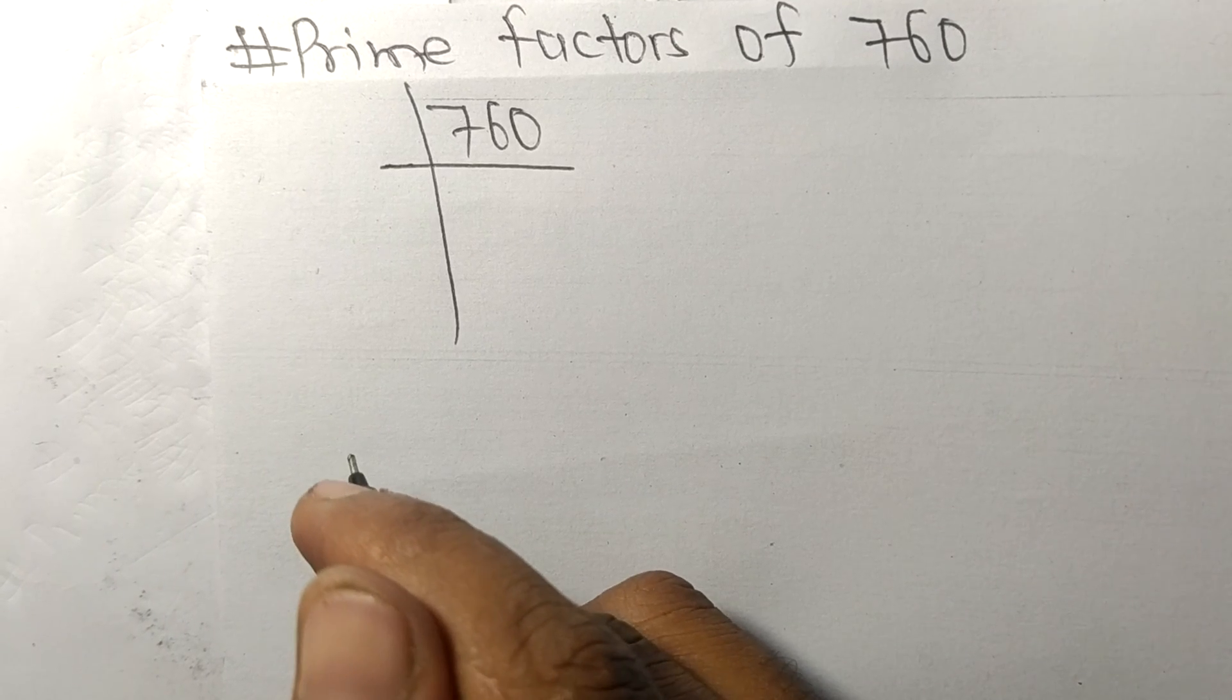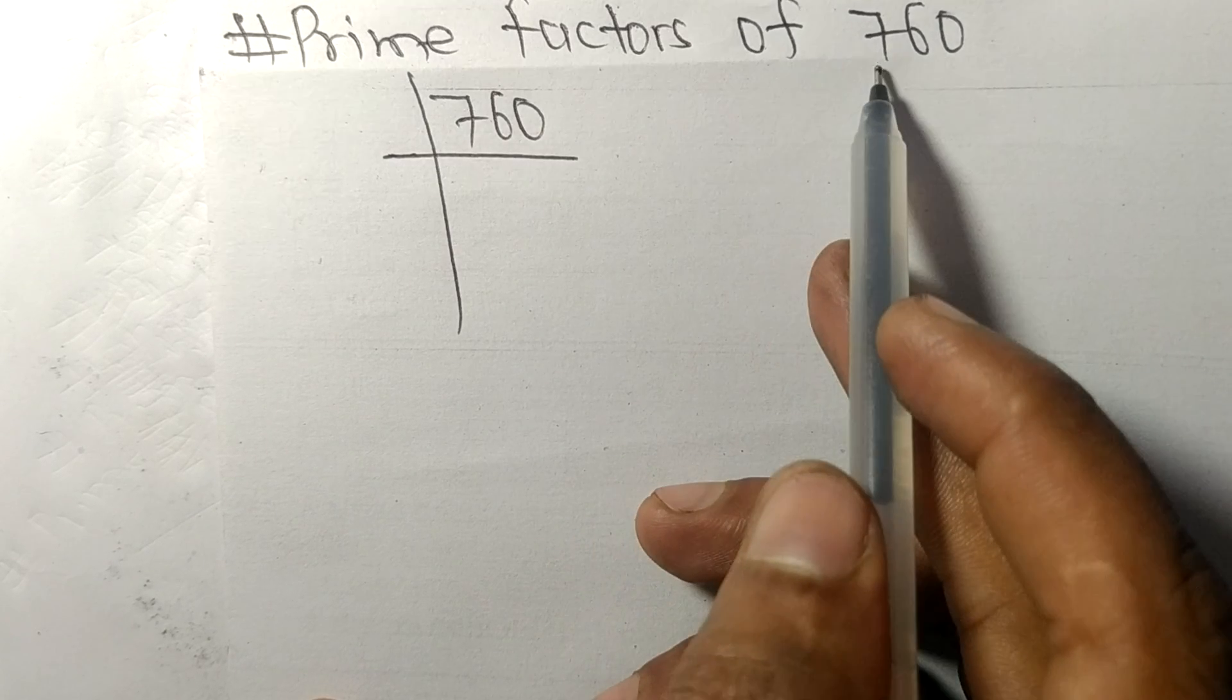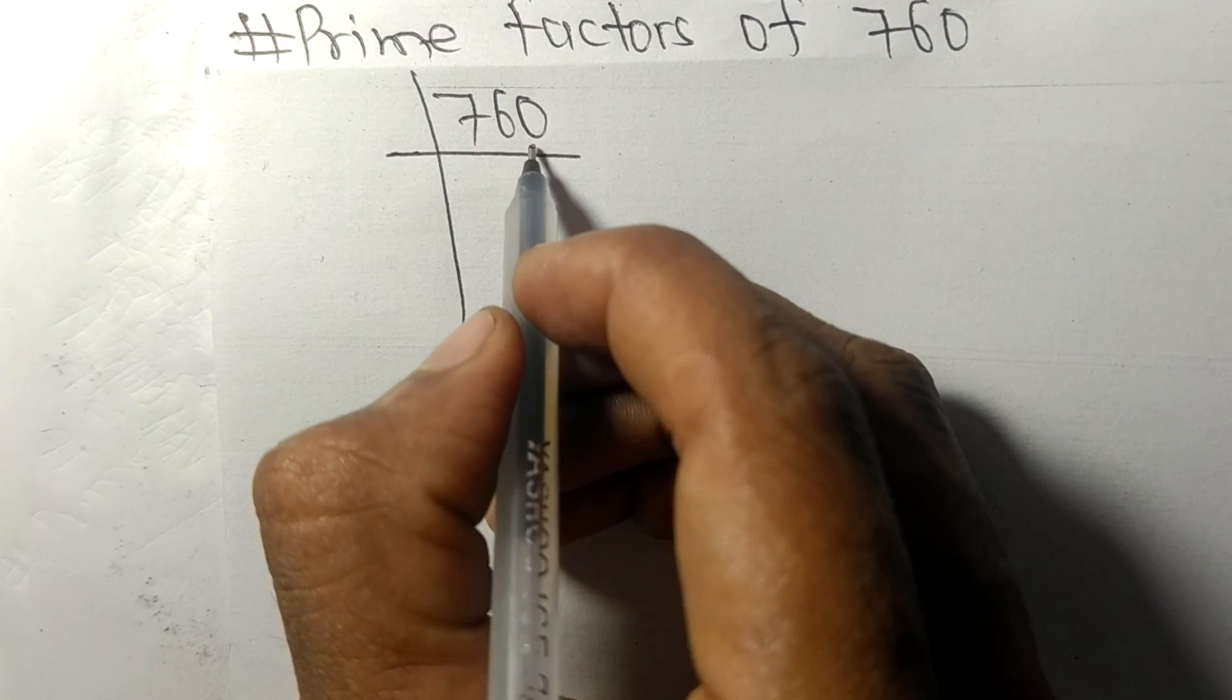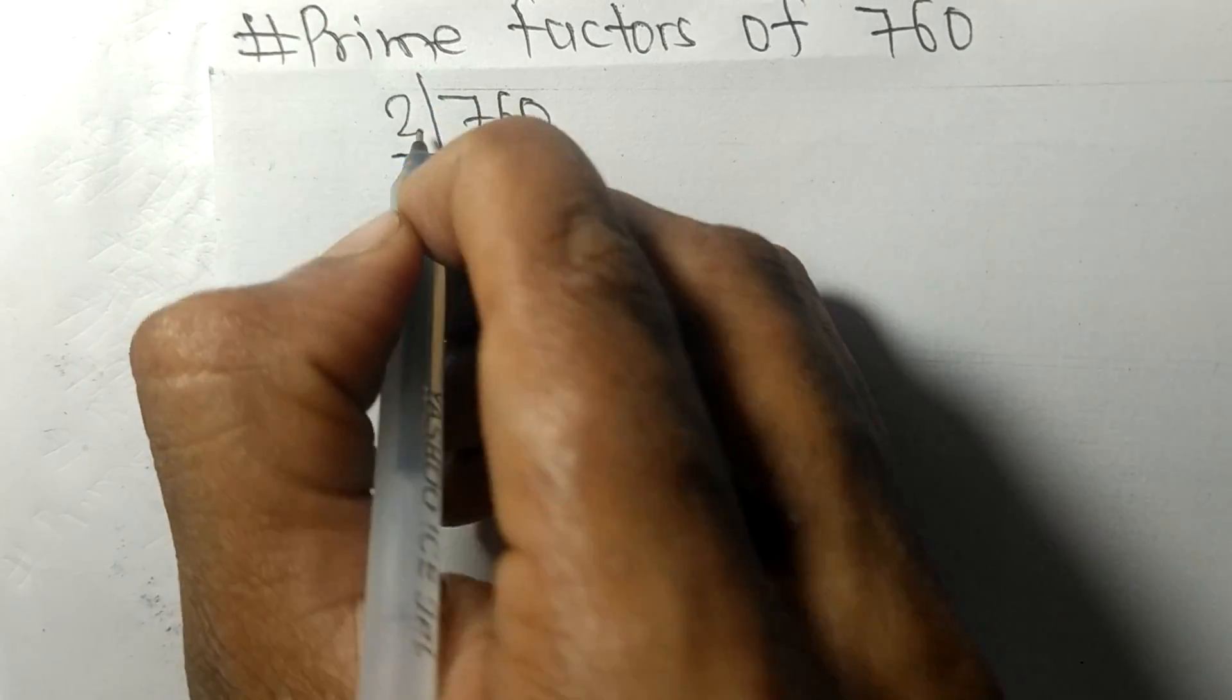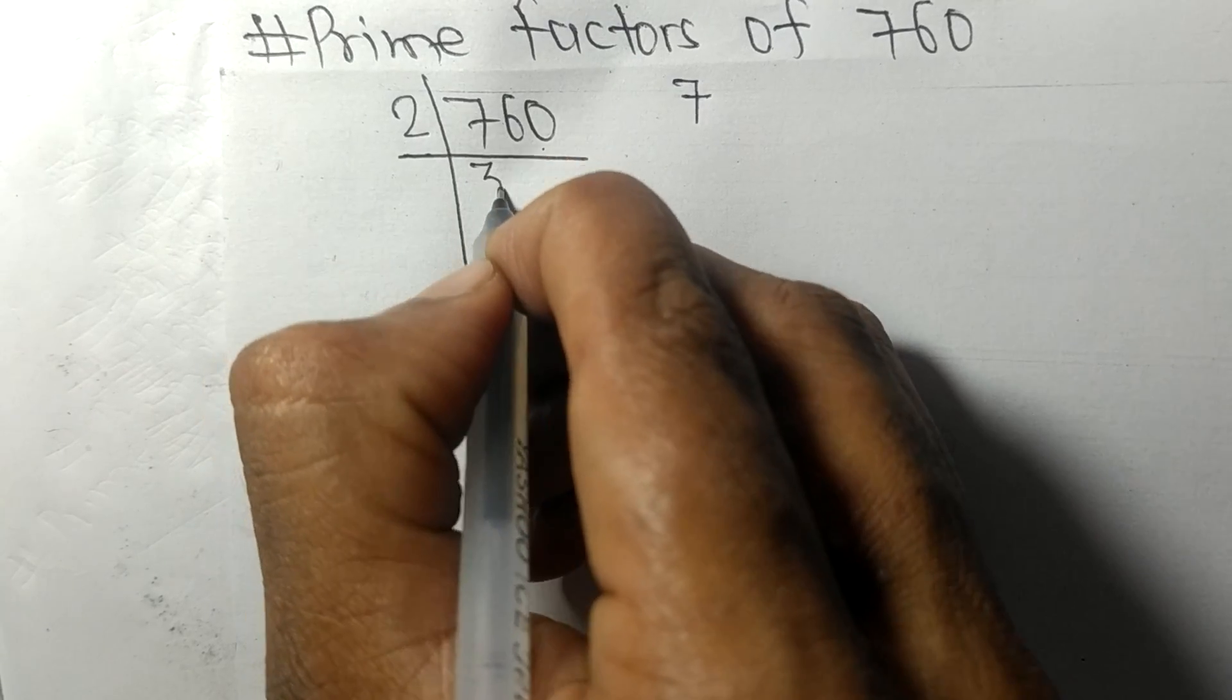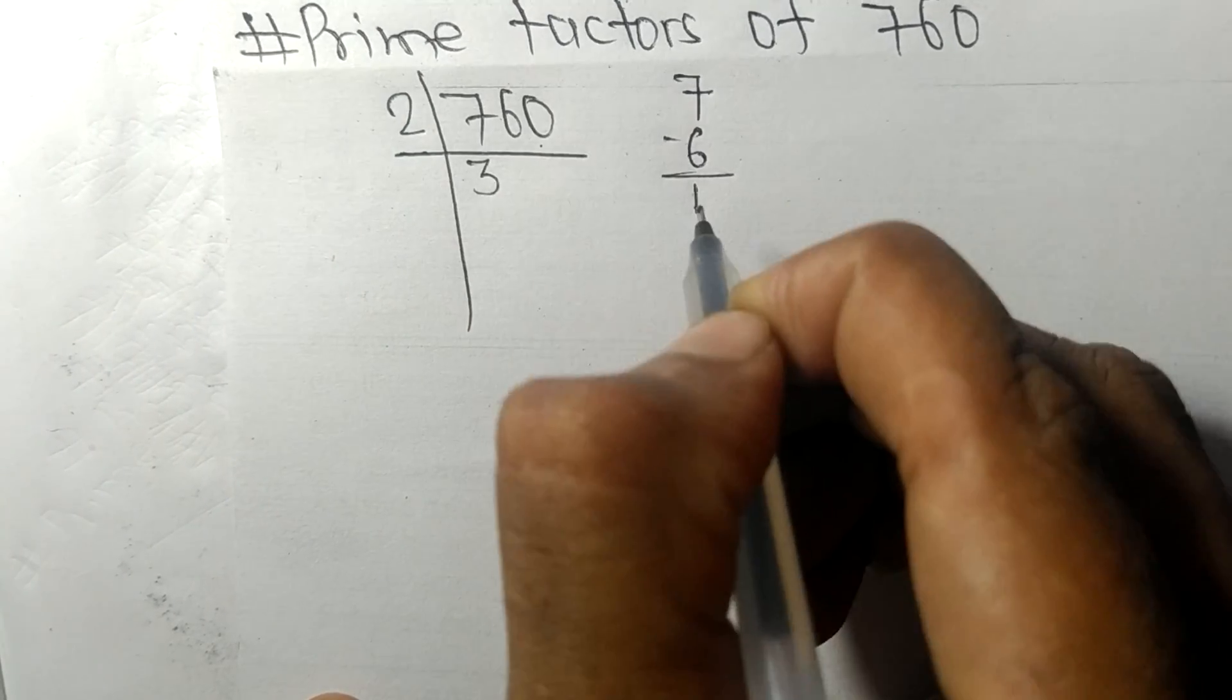Today in this video we shall learn to find the prime factors of 760. It has 0 at the last, so it is divisible by 2. Here we have 7, so 2 times 3 means 6, remainder 1.